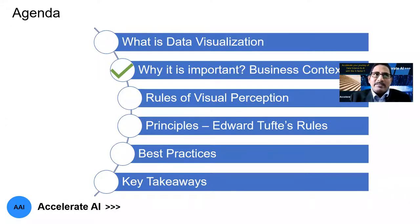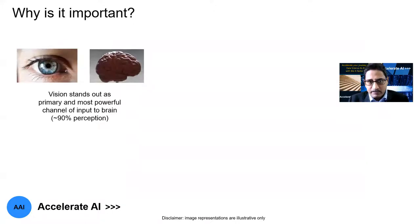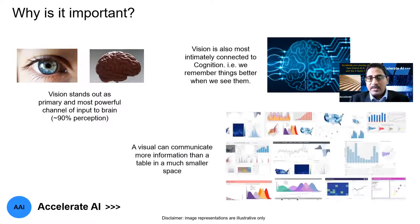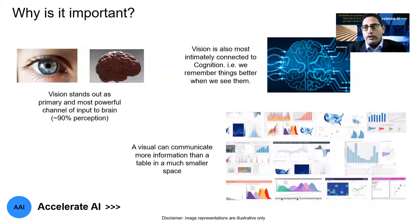Now let's try to look into the context of why this is important — what is the business context around data visualization? Vision as an intuition stands out as the primary and most powerful channel of input to our brain. Almost 90% of our perception goes through that. It is also the most important way to connect cognition — we remember things better when we see them. We can communicate through visuals much more effectively than anything else, and we all know a picture can tell more than a thousand words.